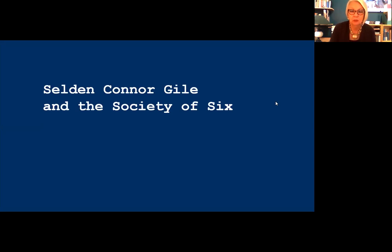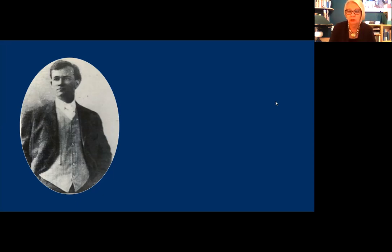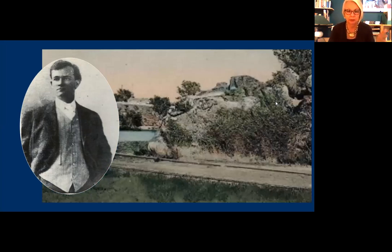They first exhibited together in 1923 and did so until 1928, and were generally well received by local critics. Selden Connor Gile grew up on a farm in Maine where the earth froze five feet deep in winter. Around 1901, Gile arrived in California, obtaining a job at the Spring Valley Ranch in Rockland — site of the state's first tennis courts and golf course. His task was to transport the payroll from the bank to 200 ranch hands, carrying a gun, and he was robbed more than once on his rounds.